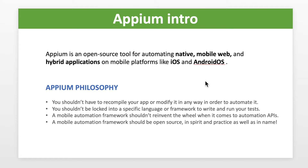Appium introduction: Appium is an open source tool for automating native mobile and hybrid applications on mobile platforms like iOS and Android. So why exactly did Appium come into the picture?